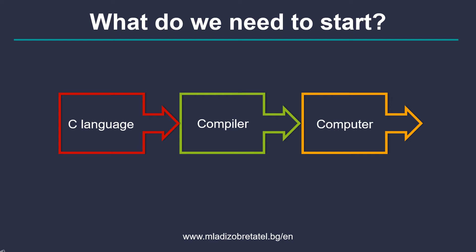Computers don't understand C or other languages directly. This is why we need a compiler to translate our C code to the computer's language, which is made only from zeros and ones. And finally, we need a computer to perform the task.